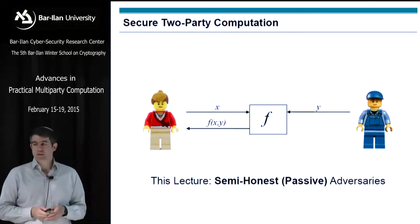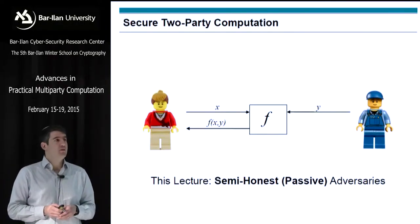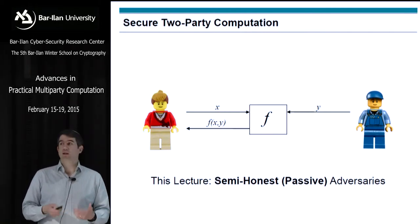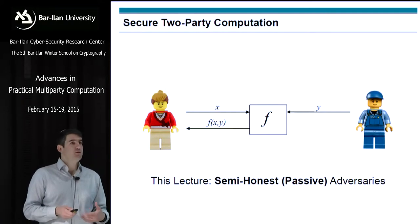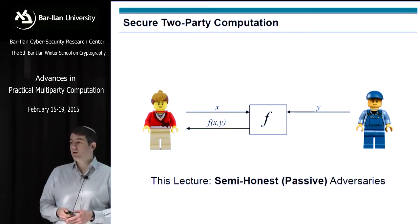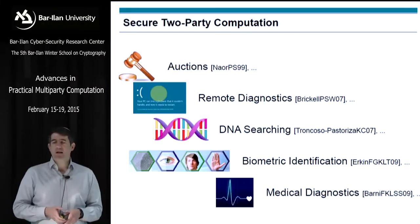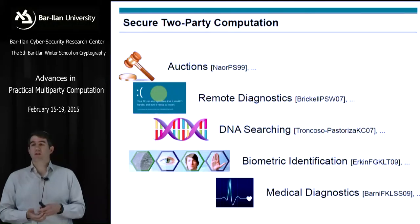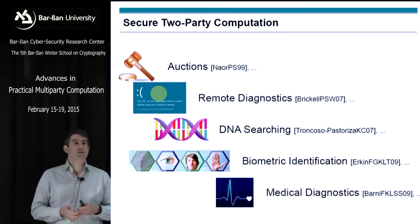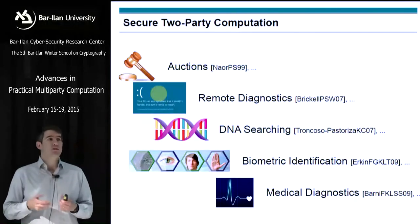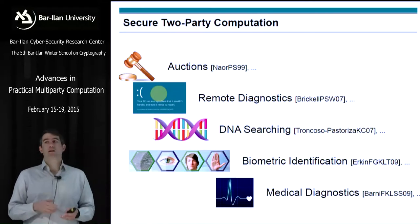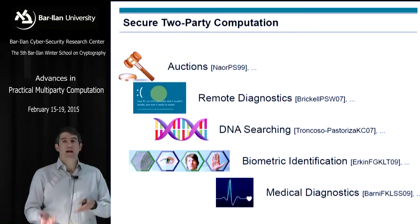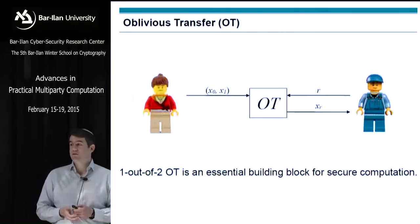We're talking about secure two-party computation. We're considering semi-honest adversaries, so they're going to run the protocol execution, do what they're supposed to do, but try to learn more by looking at the protocol transcript. There are many applications: options, remote diagnostics, DNA searching, biometric identification, medical diagnostics. All of these things require privacy in order to utilize the data — you want to somehow utilize it and maintain privacy at the same time, and that's what we can do using secure computation.